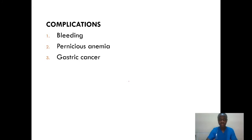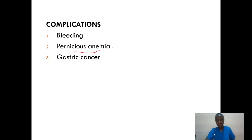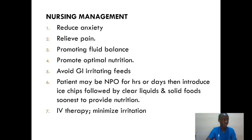What are the possible complications? We talk about bleeding. Pernicious anemia may develop because with loss of intrinsic factor, the body is not able to reabsorb vitamin B12, so this patient is at risk of developing pernicious anemia. Finally, we can have gastric cancer when it is not managed. That's about gastritis.